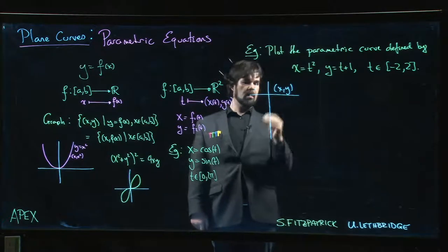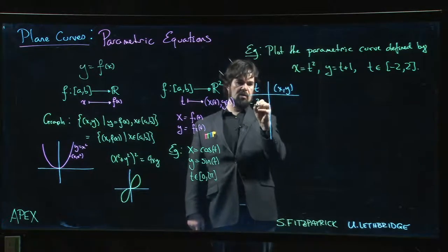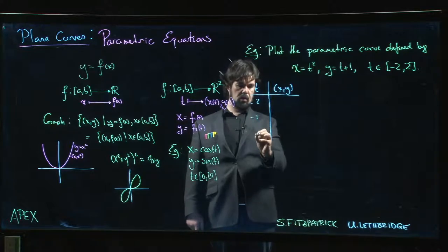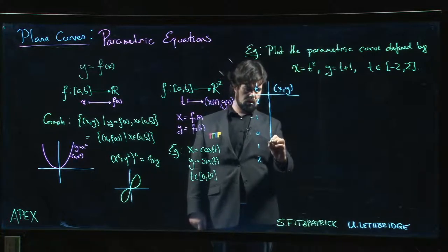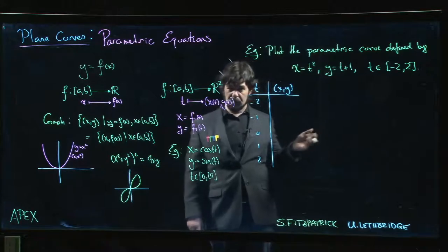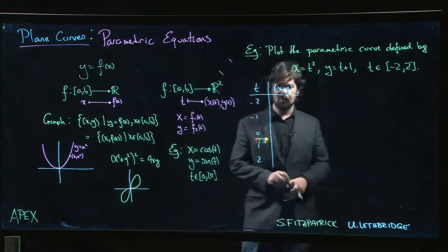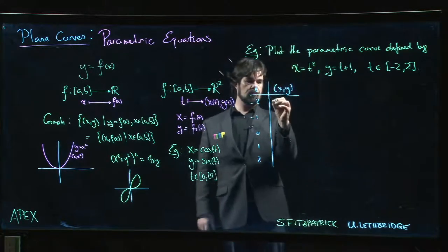We might initially take -2, -1, 0, 1, 2 - take the integer samples because we're not a computer, those are the easy ones to compute.